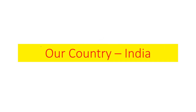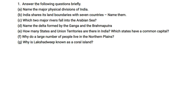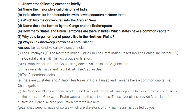Question and answer on our country India. Name the major physical divisions of India. The major physical divisions of India are: the Himalayas, the northern Indian plains, the great Indian desert, the peninsular plateau, the coastal plains, and the two groups of islands.